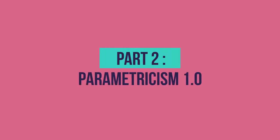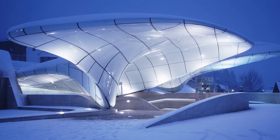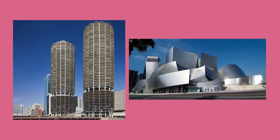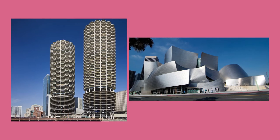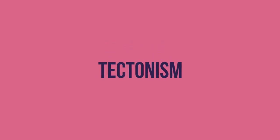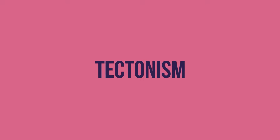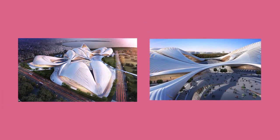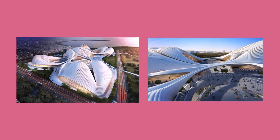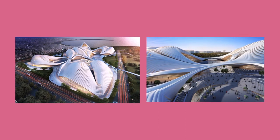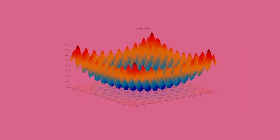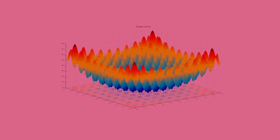Parametricism 1.0: parametric architecture, to the author, is the new style replacing modernism. A sub-style under parametricism, called tectonism, is the only form that can be adapted to structural and environmental advancements. It allows for a high level of technical rationalities, while keeping the architect's degrees of design freedom to address the program and context of the project. The style is driven by sophisticated computational logics.